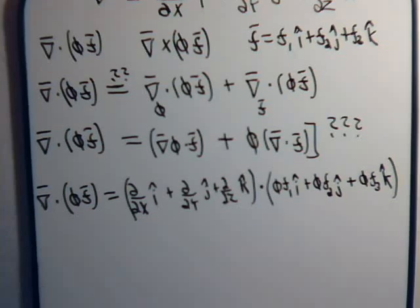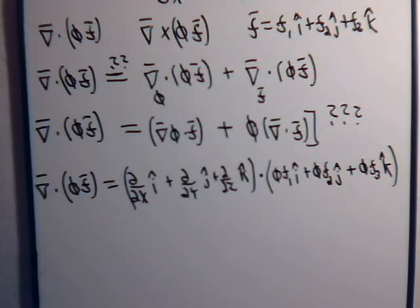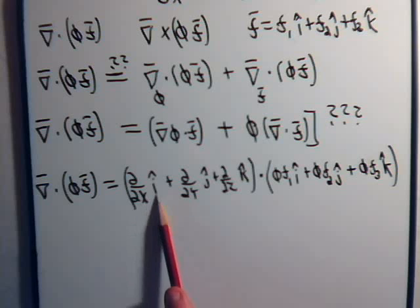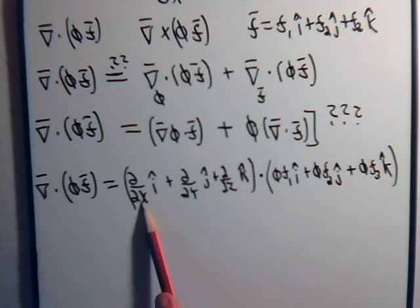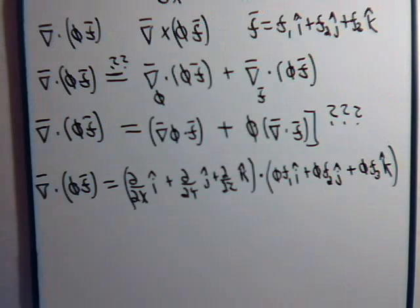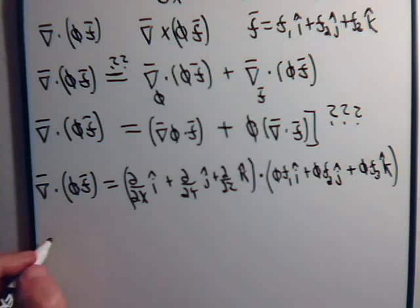and what we're going to do, that's right, we have to dot by degrees. So, here we have i dot i, that's 1, so here then we have the partial with respect to x of phi times f1. So, this equals